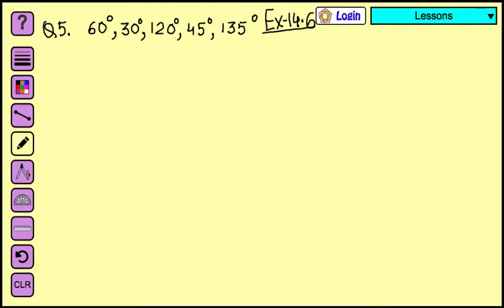We are going to do question number 5 of exercise 14.6, which is practical geometry. In this question we have to construct 60 degree, 30 degree, 120 degree, 45 degree, and 135 degree using ruler and compass only, no protractor. Let's see how we can construct. First of all, we take a line. I have to draw a line.